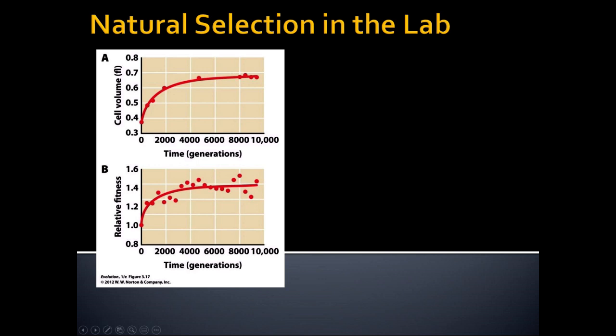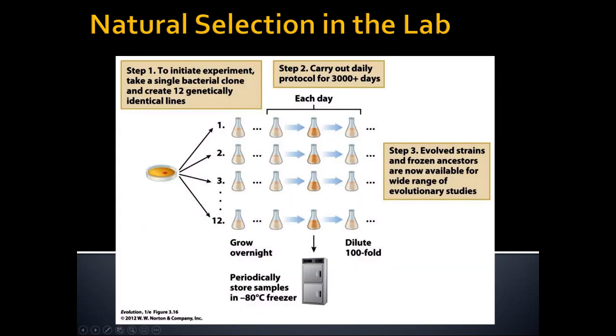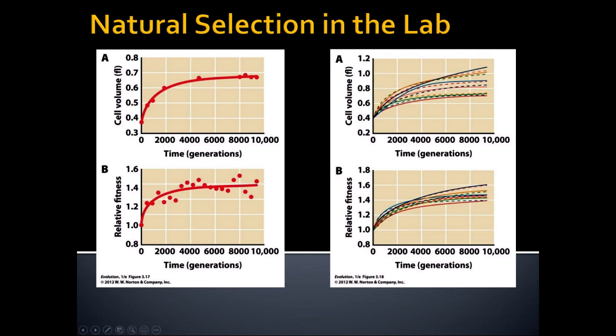Here are results of one experiment over 10,000 generations. They started at a fairly low fitness level, but over time — especially at the beginning — they got better very quickly, then reached a plateau where they had maximized fitness for living in that area. When they looked at all 12 experiments run identically, notice that they don't have identical outcomes. Despite starting with the same genetic beginnings and the exact same environment, they ended up in different places. They all improved from where they started, but they didn't all end up in the exact same area.